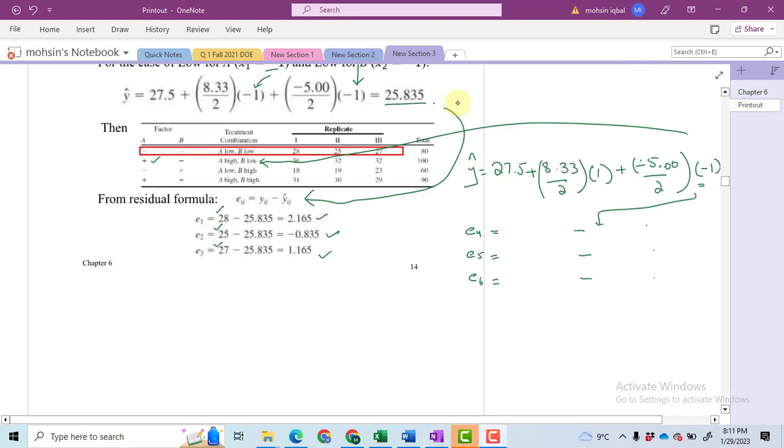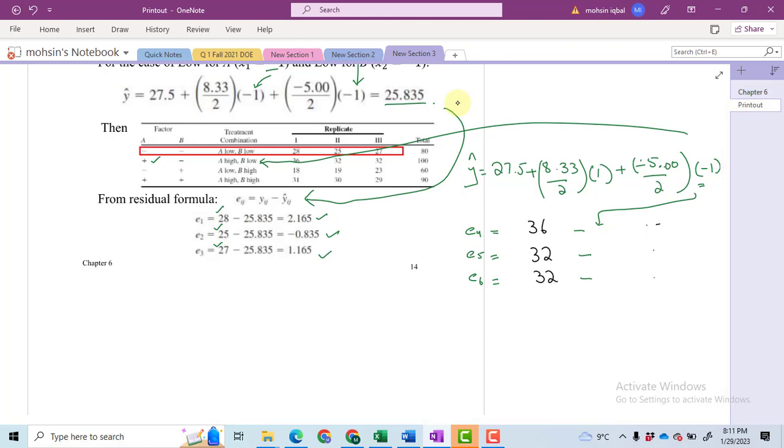So write here first 36, then 32, and then 32. So after subtracting the predicted value from these three, we will get our residuals. Likewise you will have to do for treatment 3 and treatment 4.